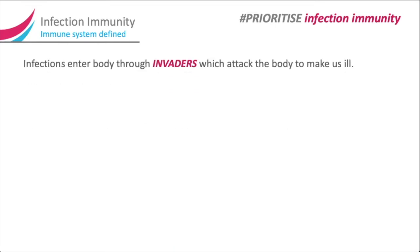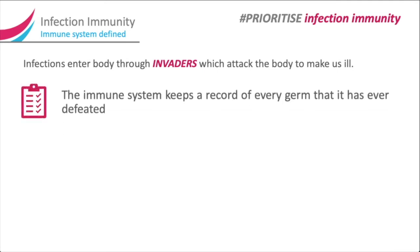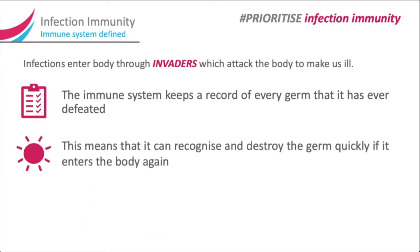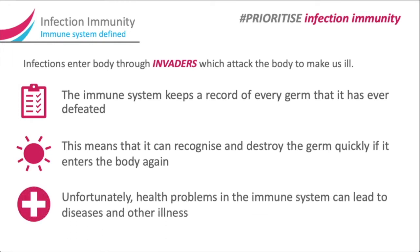Infections enter the body through invaders which attack the body to make us ill. The immune system keeps a record of every germ that it has ever defeated. This means that it can recognise and destroy the germ quickly if it enters the body again. Unfortunately, health problems in the immune system can lead to diseases and other illnesses, including infection variants.